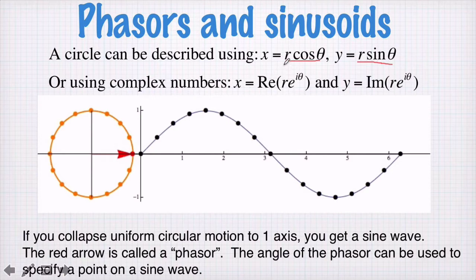Now we could write these equations here for x and for y using complex exponential notation, because the real part of r times e to the i theta is r cos theta. So these two equations here are actually the same. Similarly, the imaginary part of r e to the i theta is equal to r sin theta. So these equations here are the same.